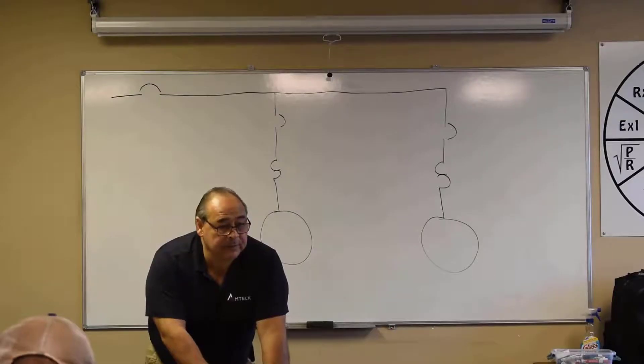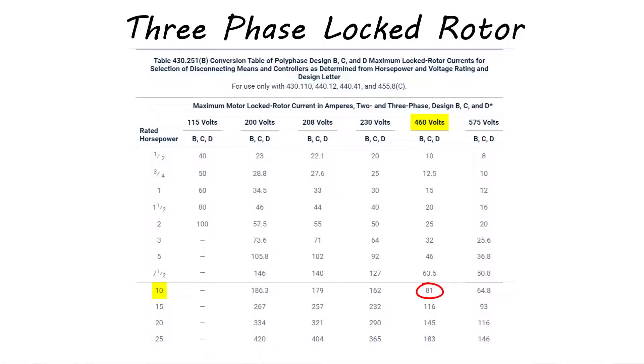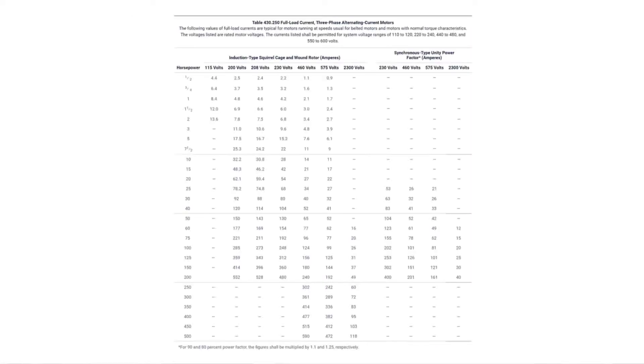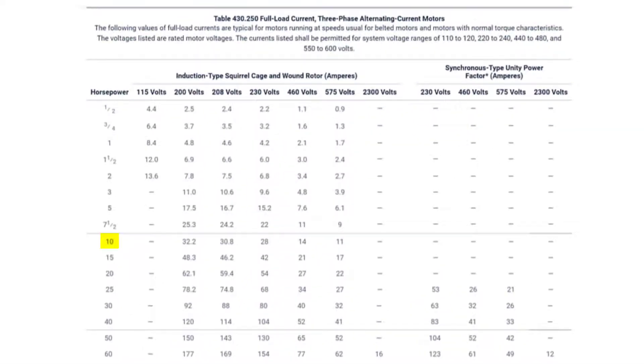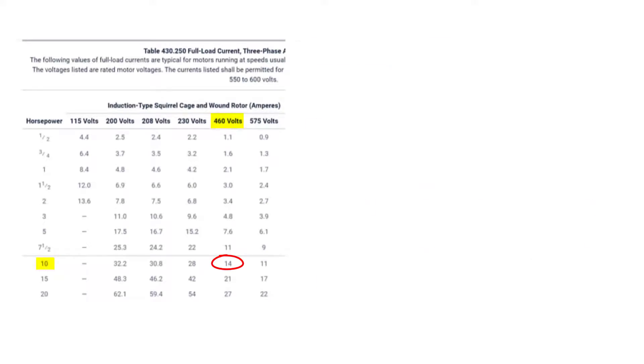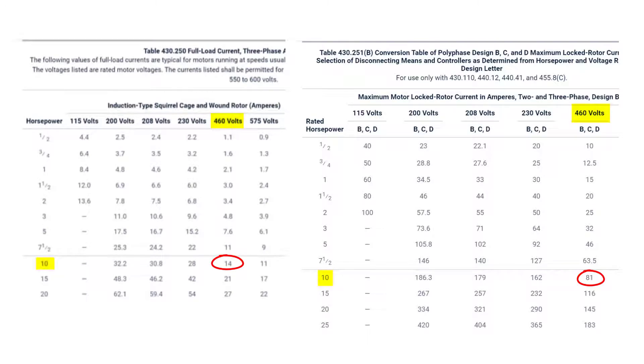If they're asking for a locked rotor, they're looking for these tables, not the other. Now, the reason why that might be confusing, remember that 10-horsepower at 460 volts is 81. Let's go back to our 430.250 table. Let's find that same motor. 10-horsepower fed with 480 volts. What is a full-load current? 14. So what I'm saying is this. On a 10-horsepower motor, you've got 14 for full-load current and 81 for locked rotor current. Make sure you're on the right table. If they ask for a locked rotor, don't go to the full-load current table. If they ask for a full-load current, don't go to the locked rotor table.